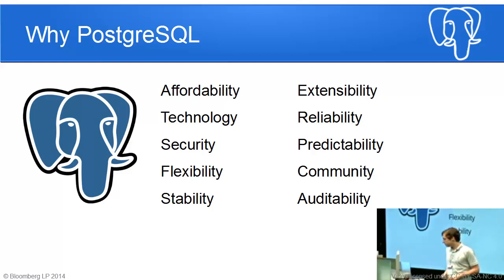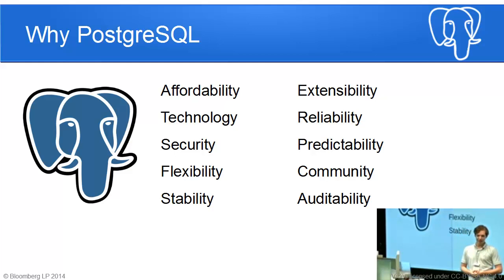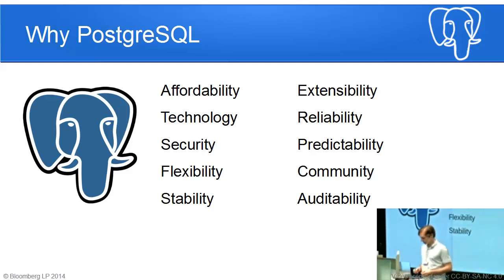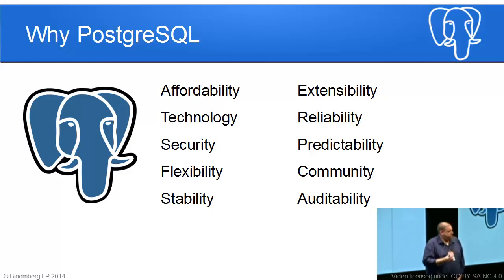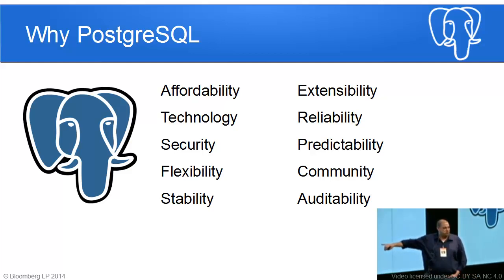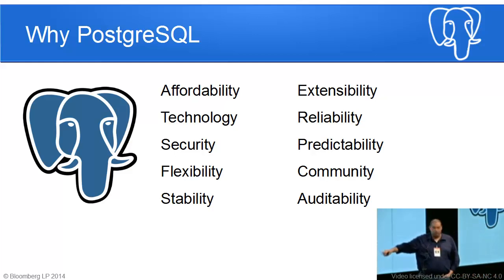Last but not least, auditability and stability. Postgres is very auditable through its write-ahead logs. Coming out in Postgres 9.5, there's a special internal auditing extension that allows you to audit every single command being run in the database. Also, auditability of the source code — it's very easy to see different changes. You see everything as it's happening; it's an open process done on a mailing list. There's nothing closed whatsoever. Many governments around the world use Postgres specifically for this auditability feature.